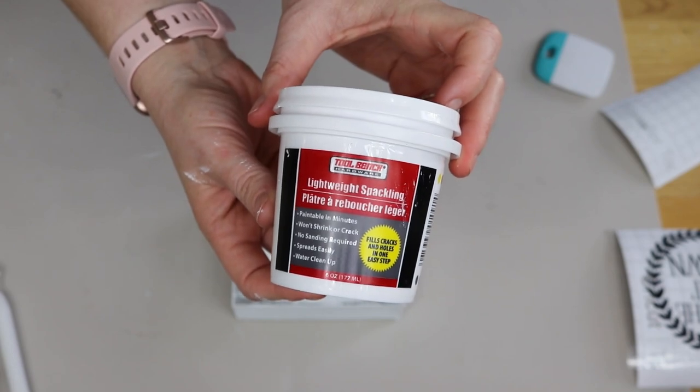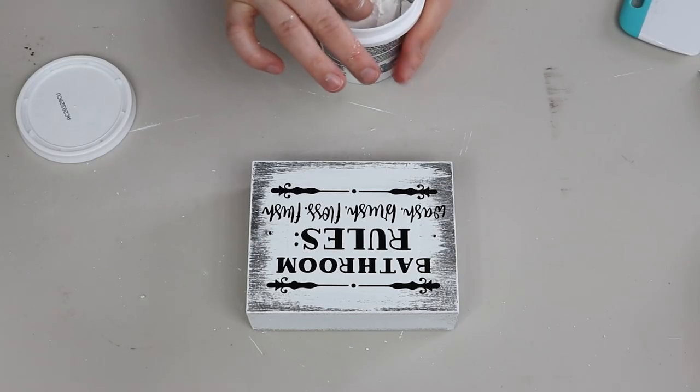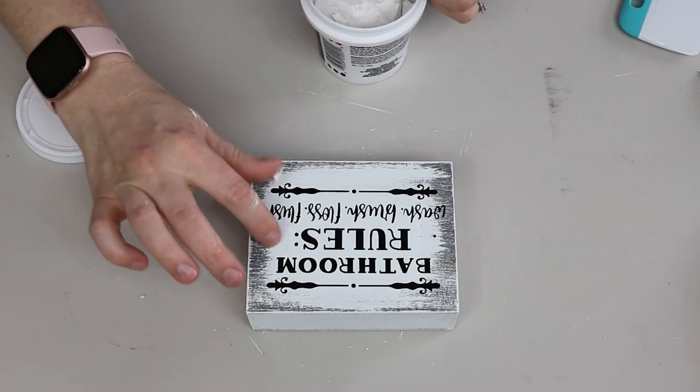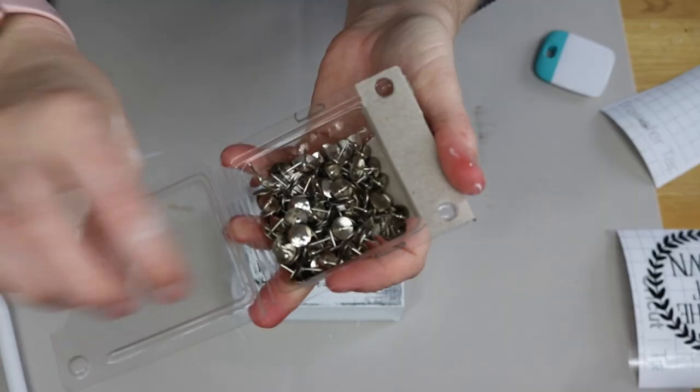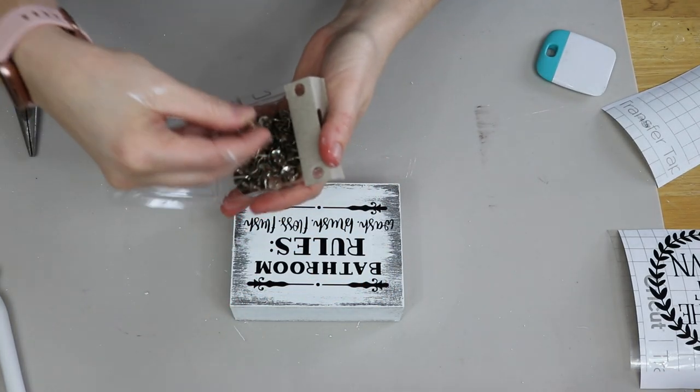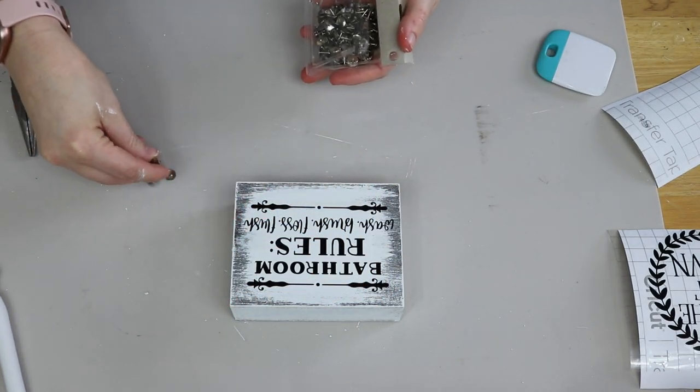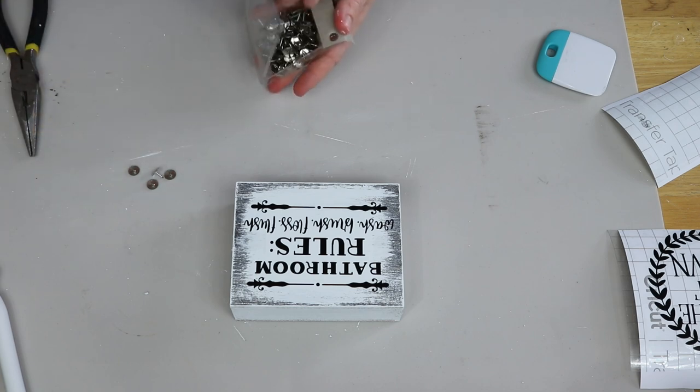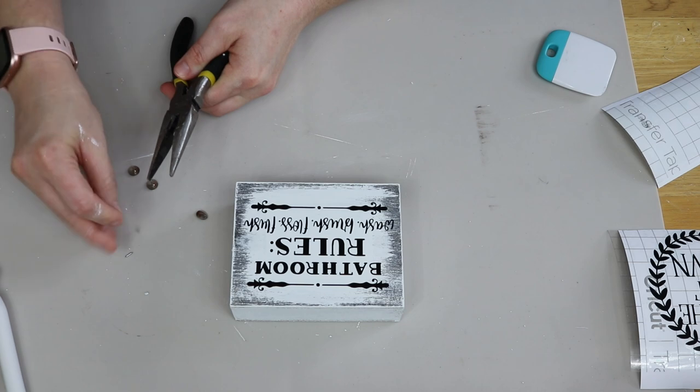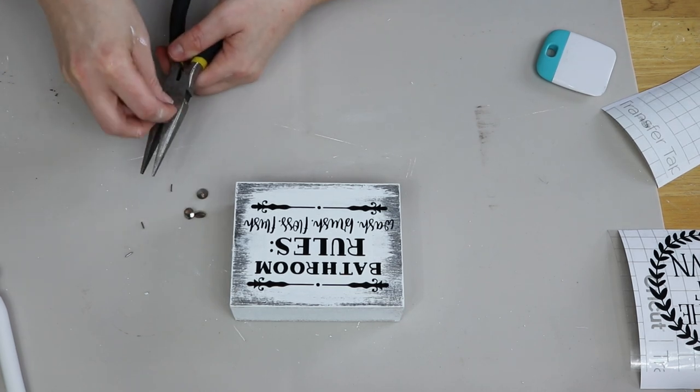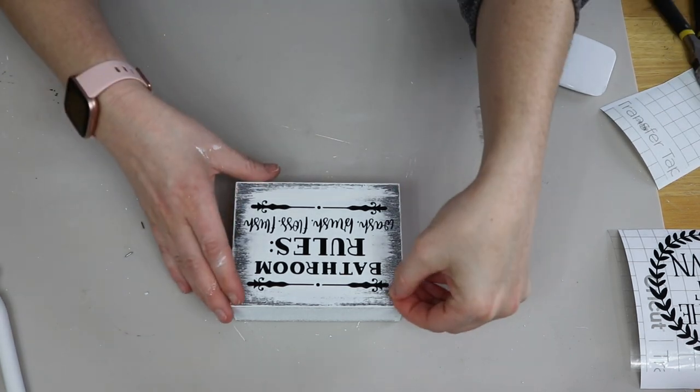So after I had transferred the image to the box I noticed that there were a couple of holes on there from a previous piece of metal so I'm just taking this Dollar Tree spackling and filling in those holes. I didn't have to add any paint over it I just filled in the holes with that spackling and then next I'm taking these silver thumbtacks. I thought these would be just such a great addition to this piece and just really bring it to the next level.